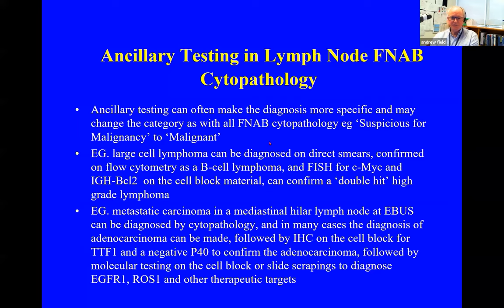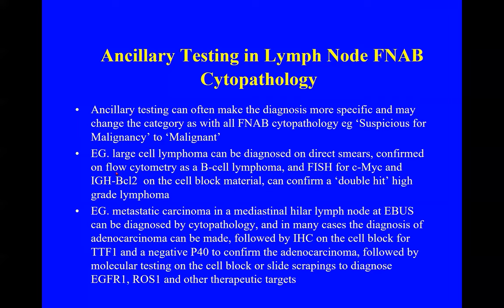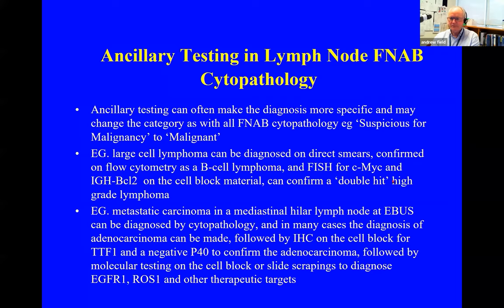Ancillary testing can make diagnoses more specific: large cell lymphoma called malignant on a smear can be confirmed on flow cytometry as a B-cell lymphoma, then FISH for c-MYC and BCL-2 on the cell block can confirm a so-called double-hit high-grade lymphoma. Metastatic carcinoma diagnosed in a lymph node — adenocarcinoma confirmed by immunohistochemistry with TTF-1 and napsin A positive, P40 negative — can be followed by molecular testing on the cell block or slide scraping to diagnose the molecular abnormality that then becomes a target for therapy.